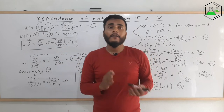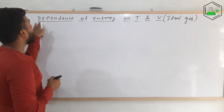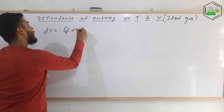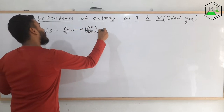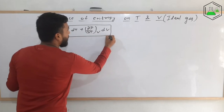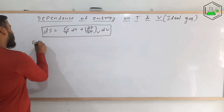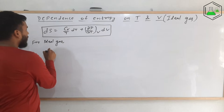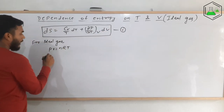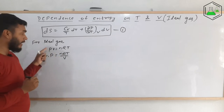Now let's see how this formula changes for an ideal gas. We start with the formula: dS = (Cv/T)dT + (∂p/∂T)_V dV. For an ideal gas, we apply the ideal gas equation pV = nRT. Let this be equation number one. Solving for p gives p = nRT/V.